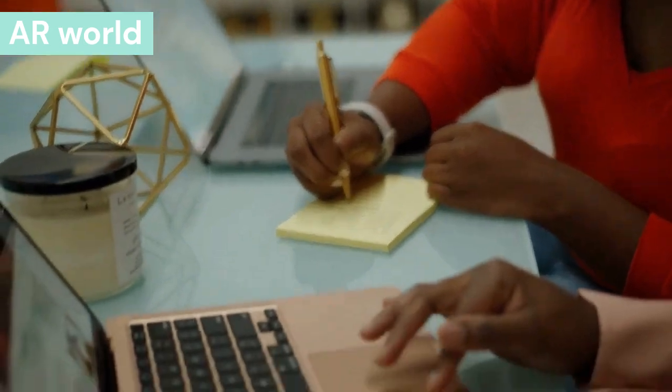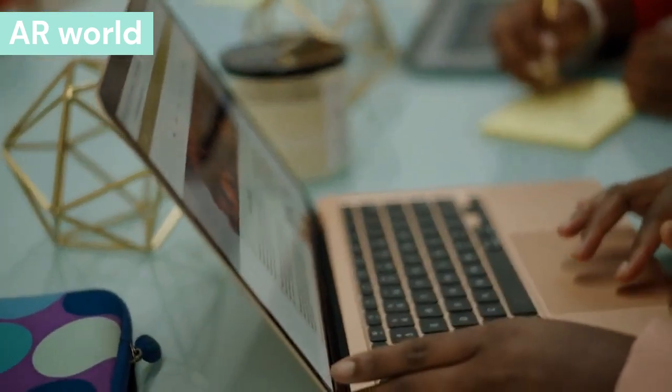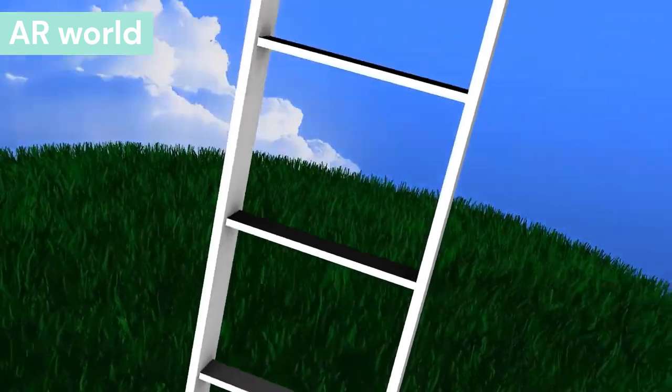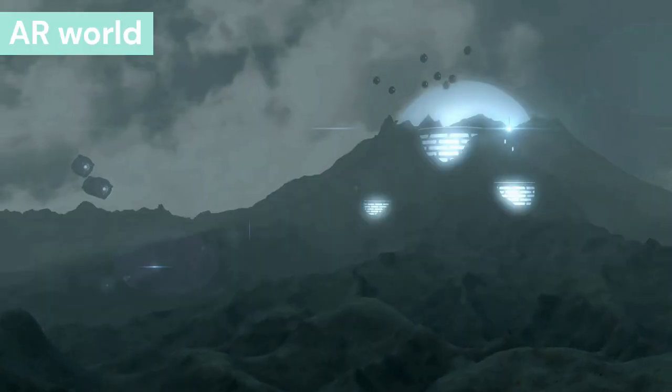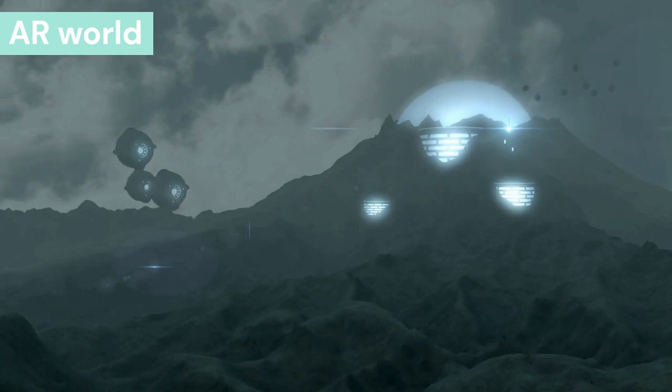Strike slip fault: This fault is formed when two rocks move side by side instead of up and down. Conversion happens at the limit. Based on the relative motion of tectonic plates, three types of boundaries are formed.